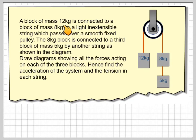A block of mass 12 kilograms is connected to a block of mass 8 kilograms by a light, inextensible string which passes over a smooth fixed pulley. The 8 kilogram block is connected to a third block of mass 5 kilograms by another string as shown in the diagram.